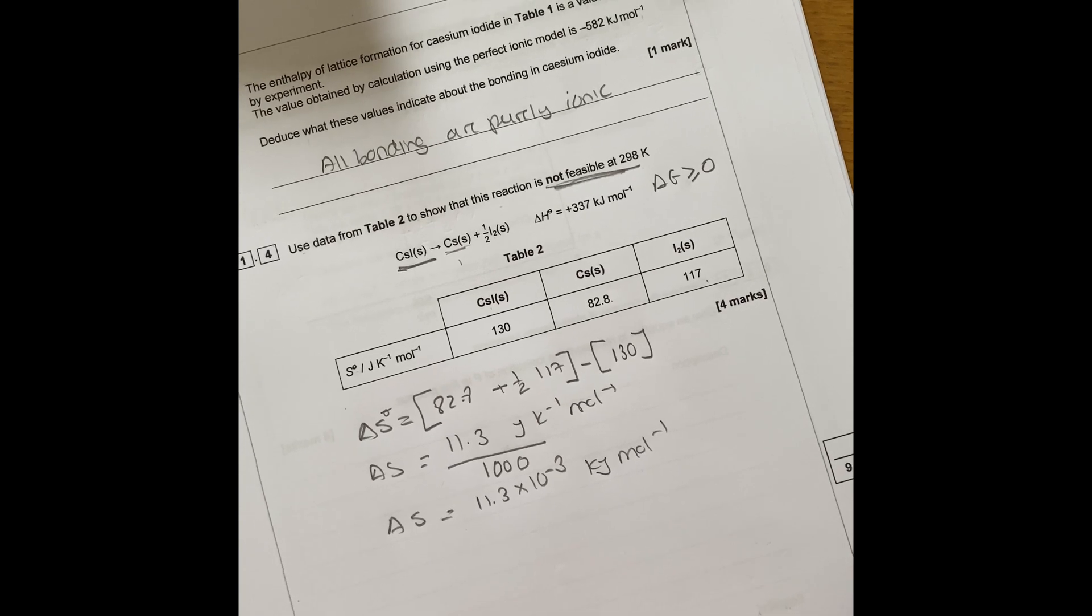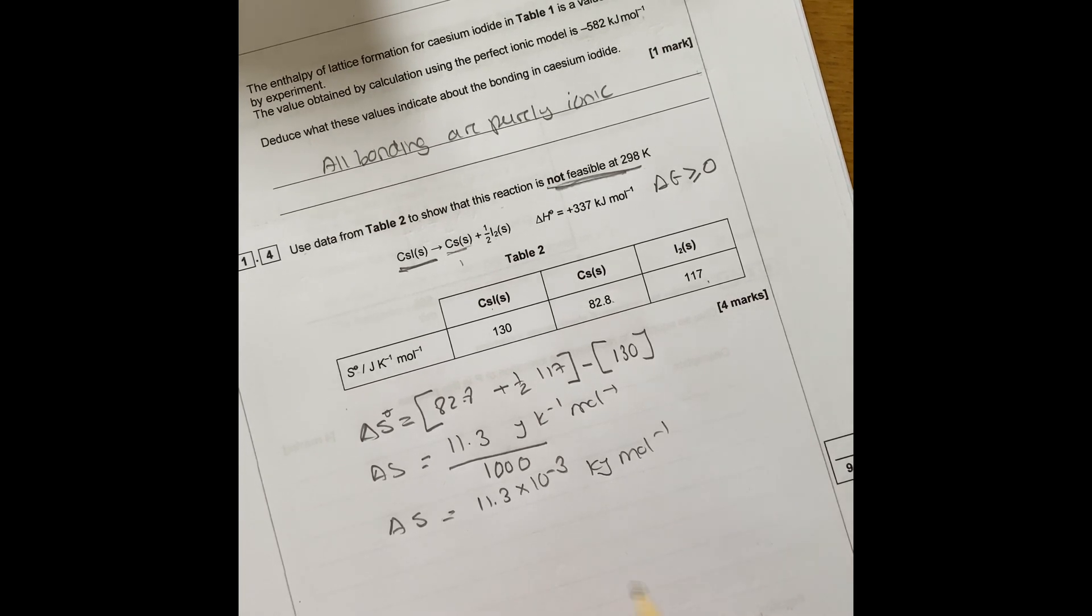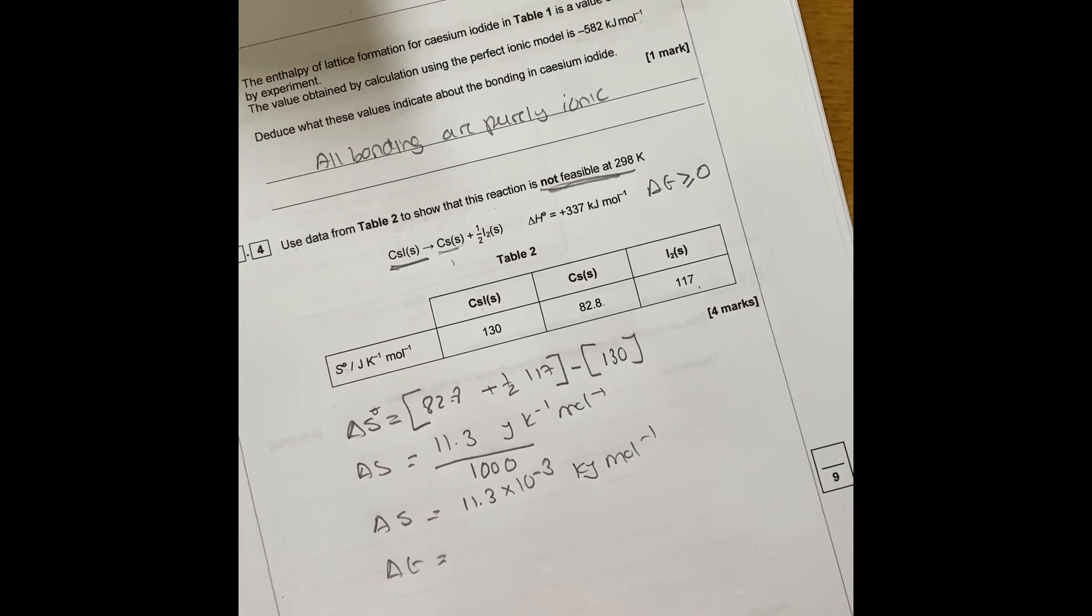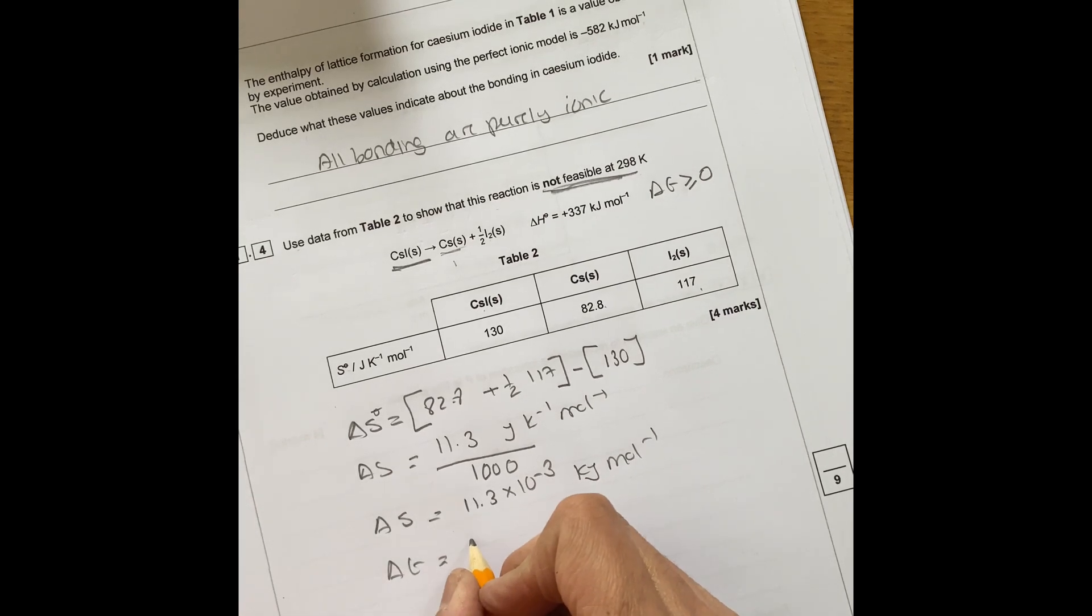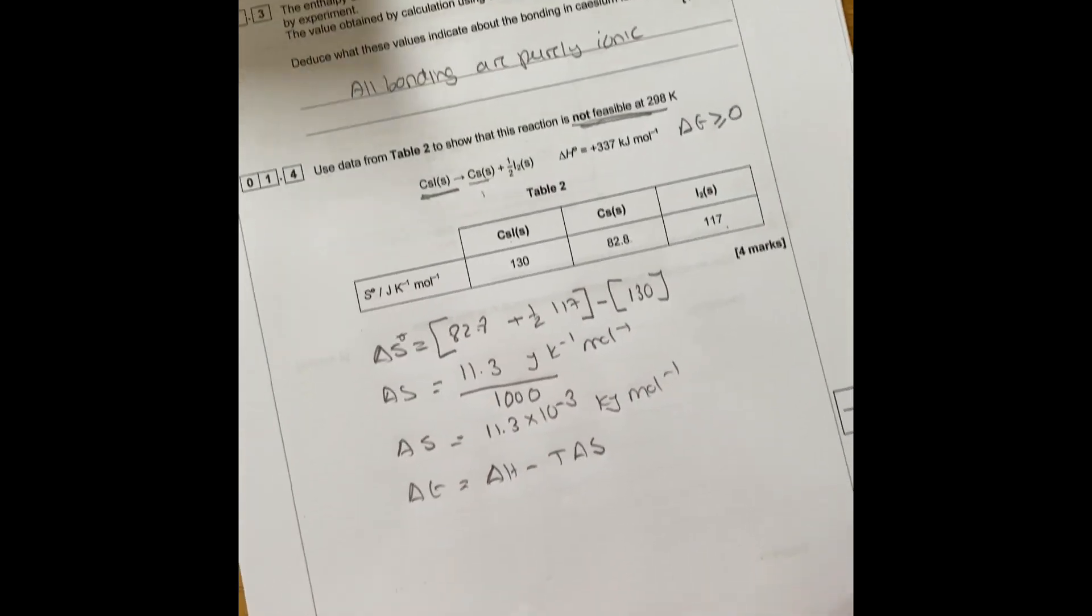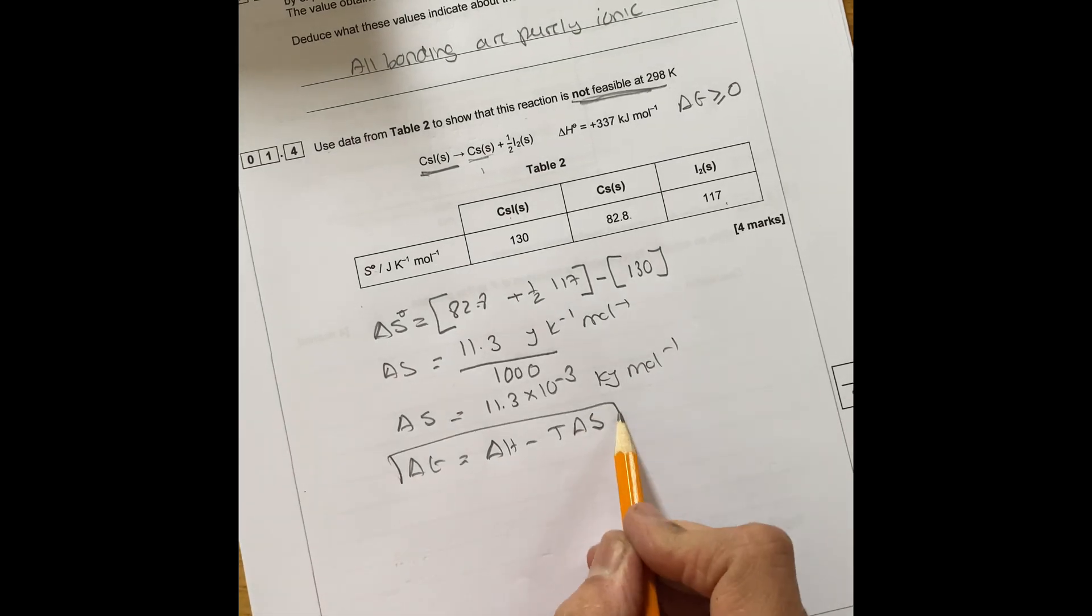So the next stage is you've got delta G. Delta G is delta H minus T delta S. This is the Gibbs free energy equation. So when delta G is bigger or equals to zero, the reaction is not feasible. When it's less than zero, it is feasible.